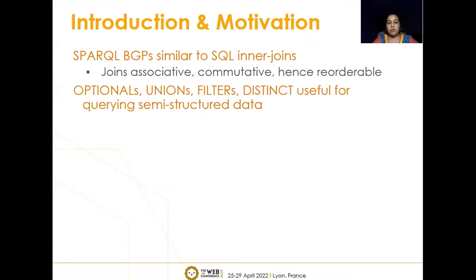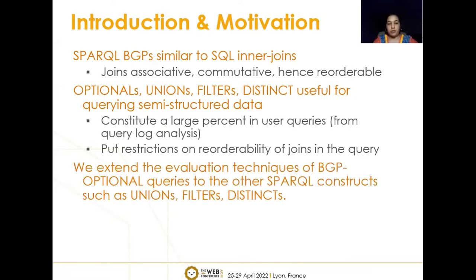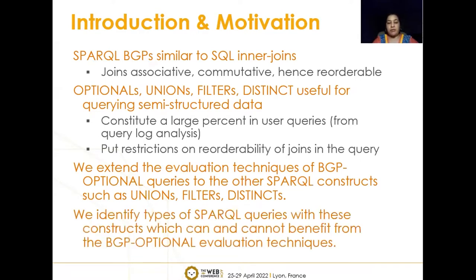Now optionals, unions, filters, and distinct — these components make SPARQL useful for querying semi-structured data. They constitute a large percentage of user queries, as derived from query log analysis. But they put restrictions on the reorderability of joins allowed in pure BGPs. In this paper, we extend the evaluation techniques of previously published BGP optional queries to other SPARQL constructs such as unions, filters and distinct. Specifically, we identify types of SPARQL queries within these constructs which can and cannot benefit from the BGP optional evaluation techniques.